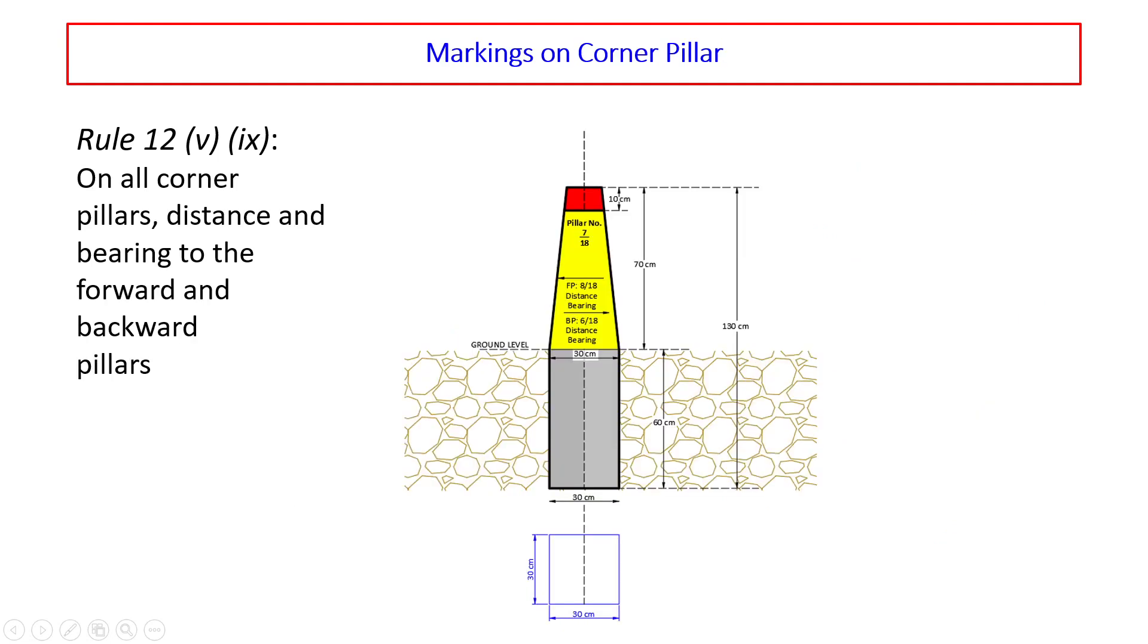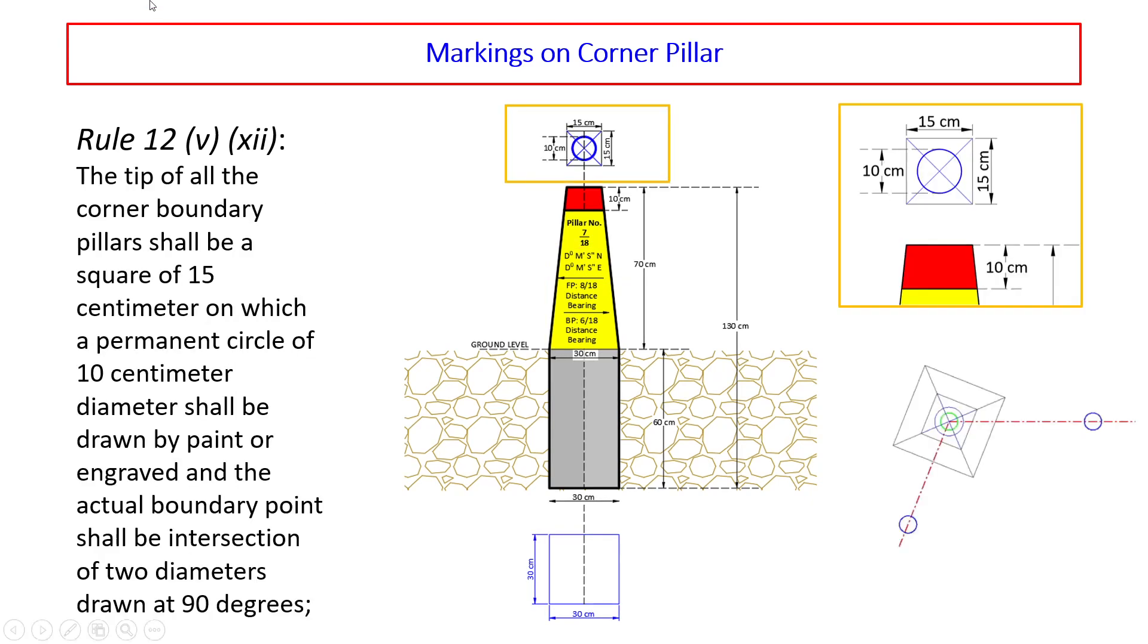Markings on corner pillars: apart from pillar number, distance and bearing to the forward and backward pillars and latitude and longitude shall be marked. The tip of all the corner pillars shall be a square of 15 centimeter on which a permanent circle of 10 centimeter diameter shall be drawn by paint or engraved and the actual boundary point shall be intersection of two diameters drawn at right angles.